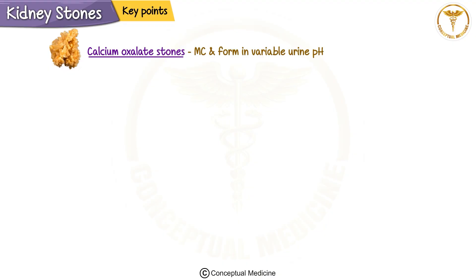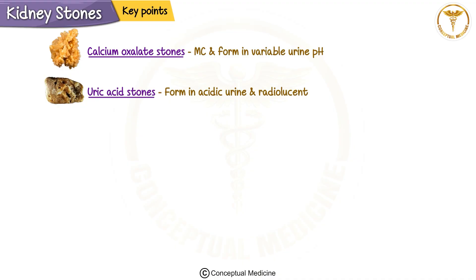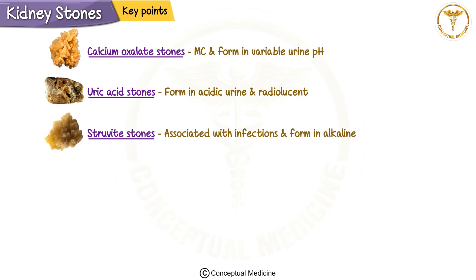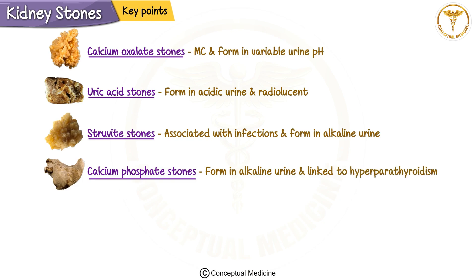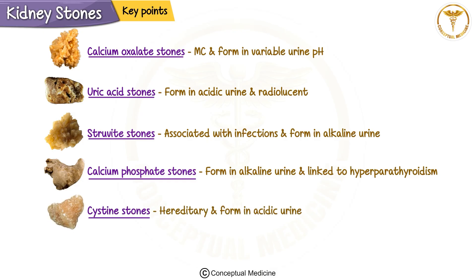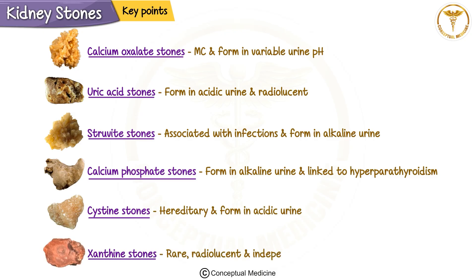To summarize: calcium oxalate stones are the most common and form in variable urine pH. Uric acid stones form in acidic urine and are radiolucent, while struvite stones are associated with infections and form in alkaline urine. Calcium phosphate stones also form in alkaline urine but are linked to specific conditions like hyperparathyroidism. Cystine stones are hereditary and form in acidic urine, and xanthine stones are rare, radiolucent, and independent of pH.